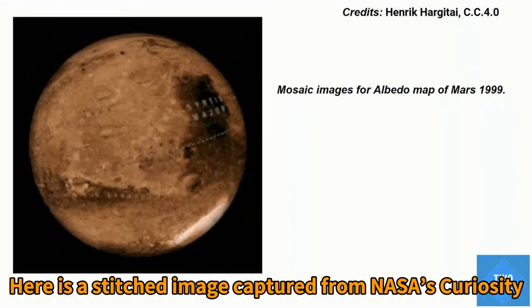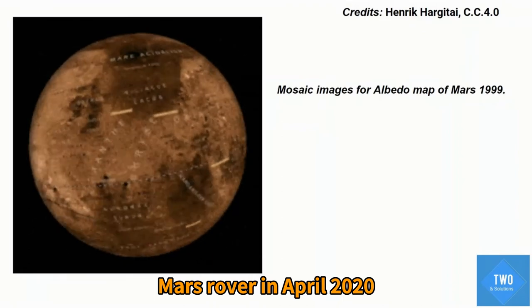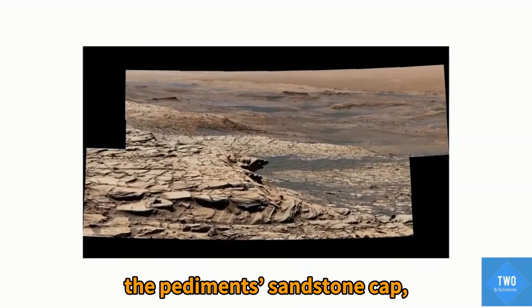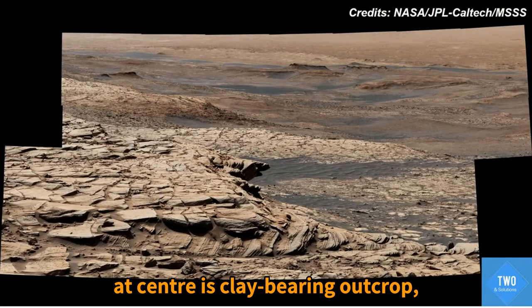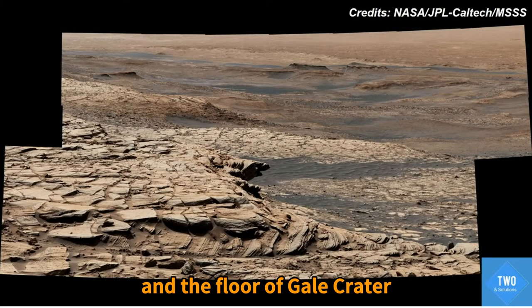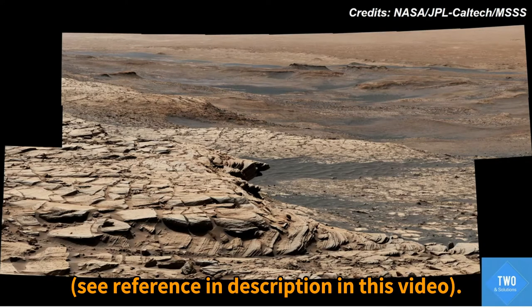This image from NASA Curiosity Mars rover in April 2020 shows the foreground, the pediment sandstone cap and center, and clay-bearing outcrop, and the floor of Gale crater in the distance. See reference in description of this video.